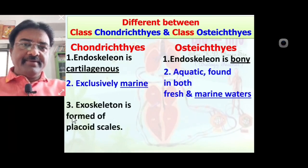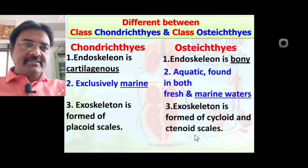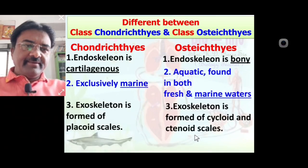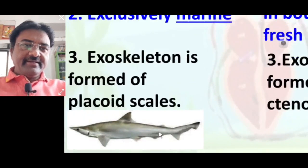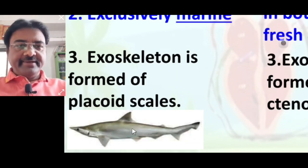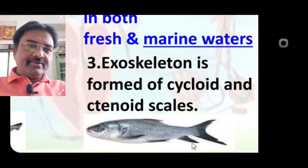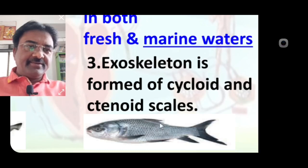Exoskeleton is formed by placoid scales in Chondrichthyes fish, while exoskeleton is formed by cycloid and ctenoid scales in Osteichthyes. As seen in the diagram: Scoliodon — a Chondrichthyes fish — has very minute placoid scales on the body surface, while Labeo — an Osteichthyes fish — has cycloid and ctenoid scales on the body surface.